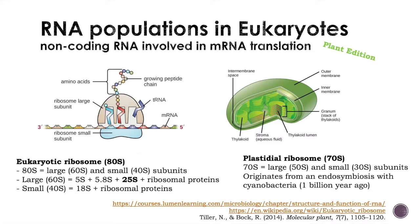There are also organelles in the cell — all cells will have mitochondrial ribosomes as well. In plants, you can also find plastidial ribosomes from the chloroplasts. This ribosome is slightly different, with a large subunit of 50S and a small subunit of 30S, which originate from an endosymbiosis with cyanobacteria a billion years ago. So you will also find this RNA when you sequence your sample.